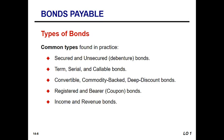Term bonds are a bond issue where all of the face value comes due on the exact same date. This is different from serial bonds, where at the original issue the maturities are staggered at regular intervals — for example, a certain amount maturing every 90 days. Under a term bond, there is a large amount of cash flow that must be accounted for at one given point in time, whereas serial bonds stretch it out over a longer period.